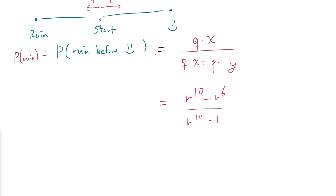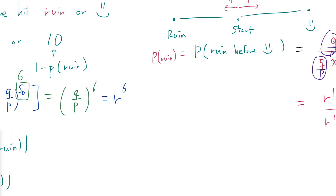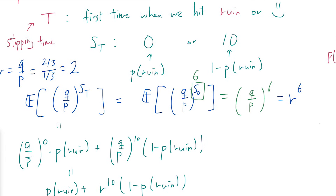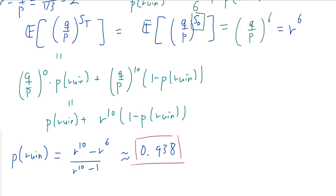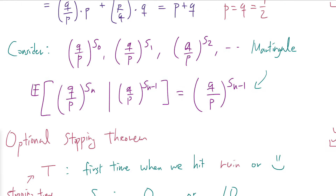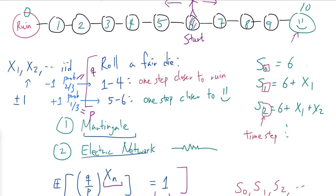After calculating, we again get P(ruin) = (r^10 − r^6) / (r^10 − 1) ≈ 0.938. One useful trick: divide numerator and denominator by p so that q/p becomes r and p cancels out. So we saw two approaches — one using martingales and one using electric networks — and I hope this gave you new insight into the problem. Thanks for watching.